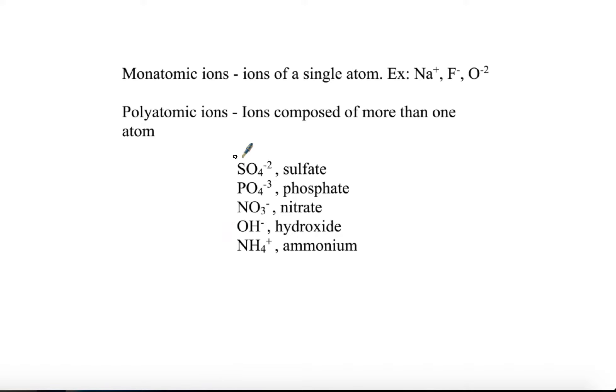Polyatomic ions are basically a compound that have an overall charge. They still behave like ions, so these are all still treated as anions with this cation exception here.